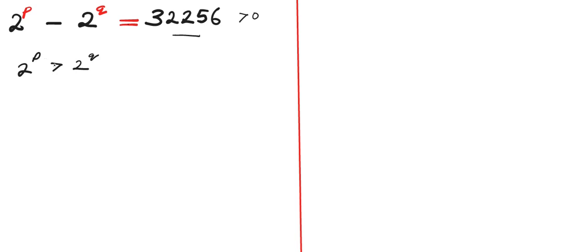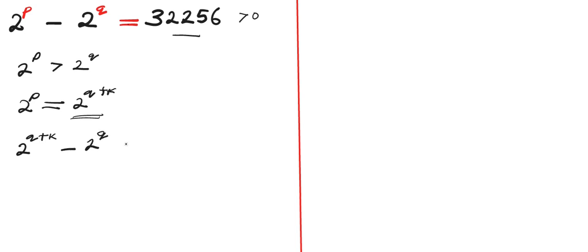So if 2 to the power of p is greater than 2 to the power of q, it also means that 2 to the power of p equals 2 to the power of q plus k, where k is a variable constant. If we insert this into the equation, where we have 2 to the power of p, this equation becomes 2 to the power of q plus k, minus 2 to the power of q, equals 32,256.